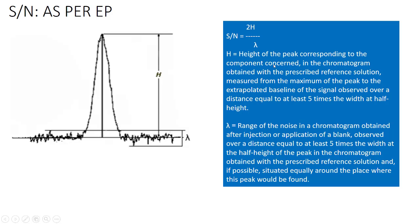where h is the height of the peak corresponding to the component concerned in the chromatogram obtained with the prescribed reference solution measured from the maximum of the peak to the extrapolated baseline of the signal observed over a distance equal to at least 5 times the width at half height. Earlier, EP has mentioned about the minimum distance of 20 times, but now it has revised to 5 times from EP 8.8.